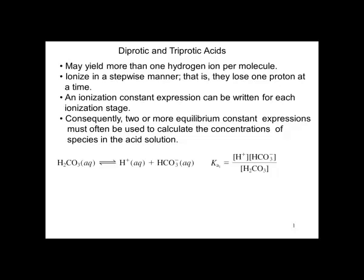Here's an example. Hydrogen carbonate dissociates into H+ and HCO3-. And Ka1 is as written. The bicarbonate anion, HCO3-, further dissociates into H+ and CO3 2-. And we have a Ka2 expression for that.